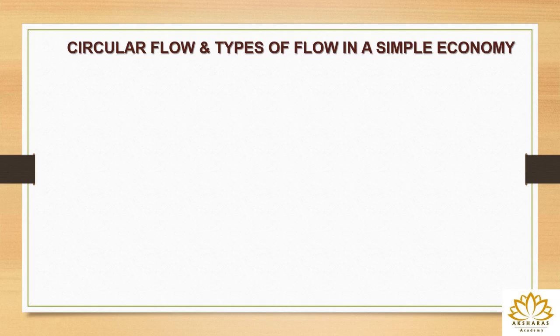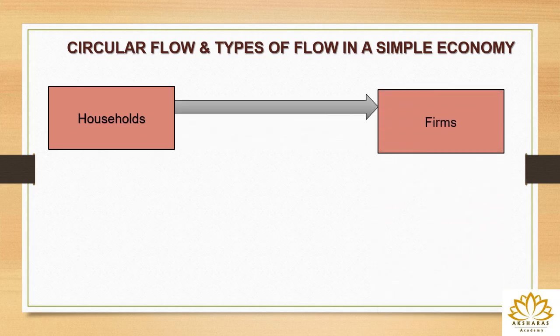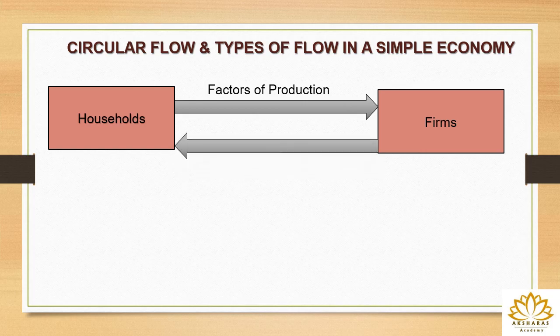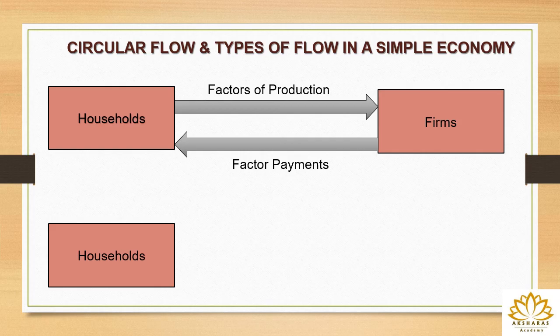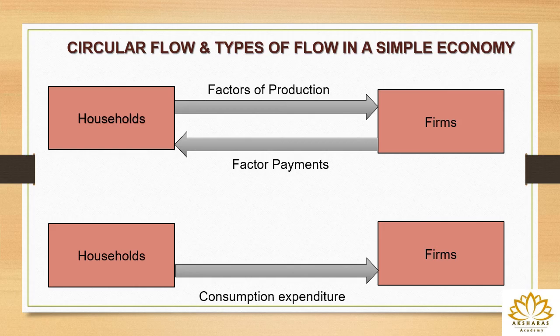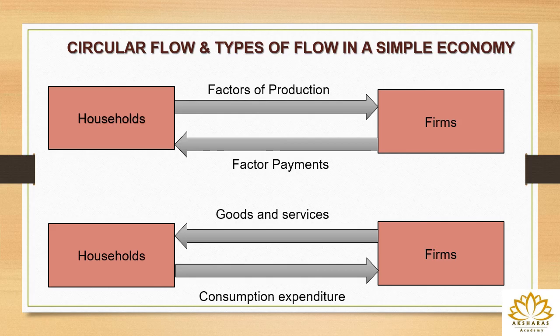In a simple economy we assume only two sectors: households and firms. Households supply factors of production to firms, who hire them to produce goods and services. The firms make factor payments to households, who receive it as factor income. The households then make consumption expenditure — purchasing the goods and services produced by the firms, who supply them in return. We can label factors of production as (1), factor payment as (2), goods and services as (3), and consumption expenditure as (4).